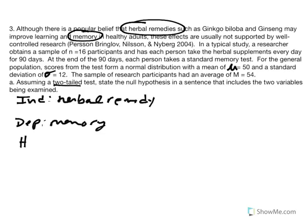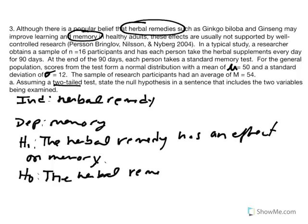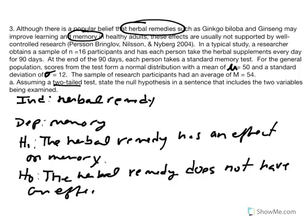If we state our research hypothesis H₁, we would state that the herbal remedy has an effect on memory. The null hypothesis H₀ negates that and states that the herbal remedy does not have an effect on memory.